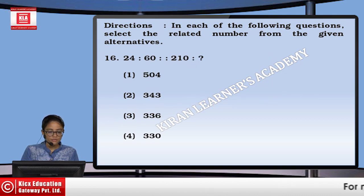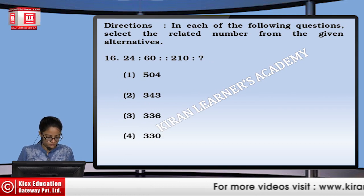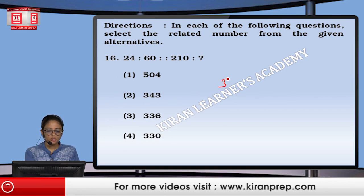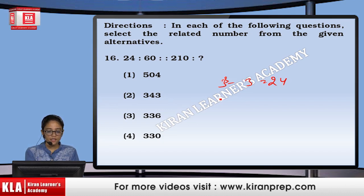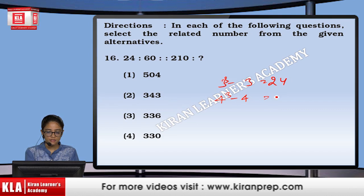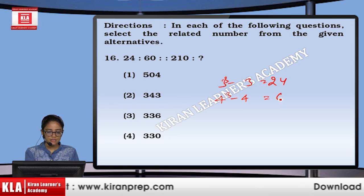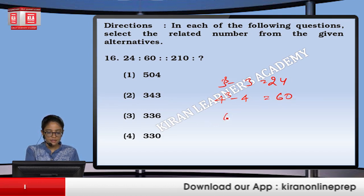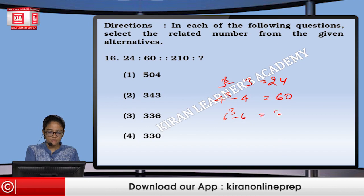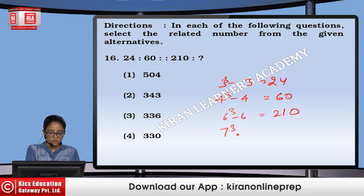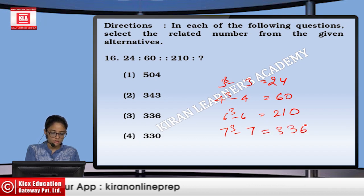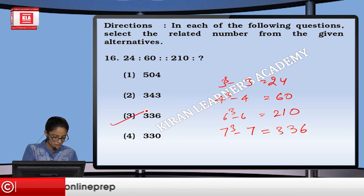Next, 24 is to 60. If I write 3 cubed minus 3, that gives us 24. If I write 4 cubed minus 4, that gives us 60. Similarly, if I write 6 cubed minus 6, that gives us 210. And 7 cubed minus 7 gives us 336. So the answer will be the 3rd option.